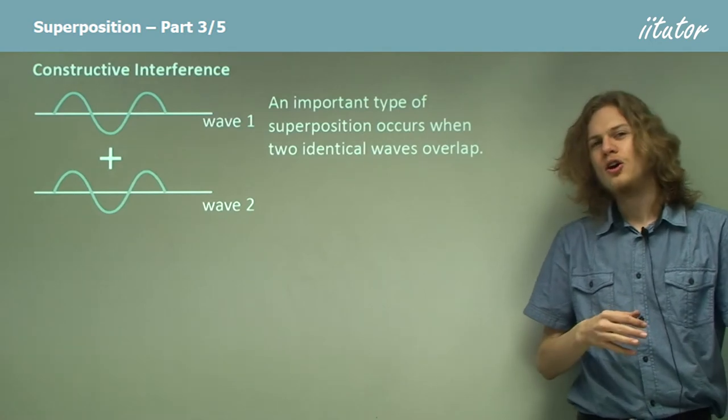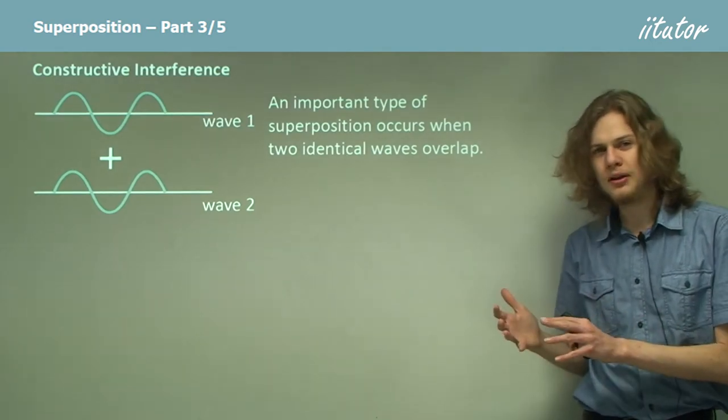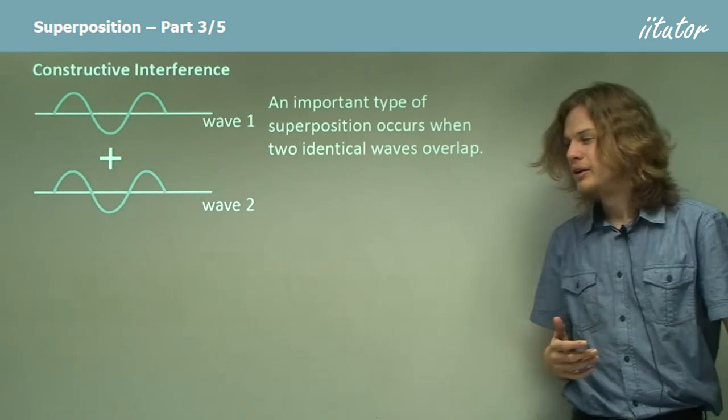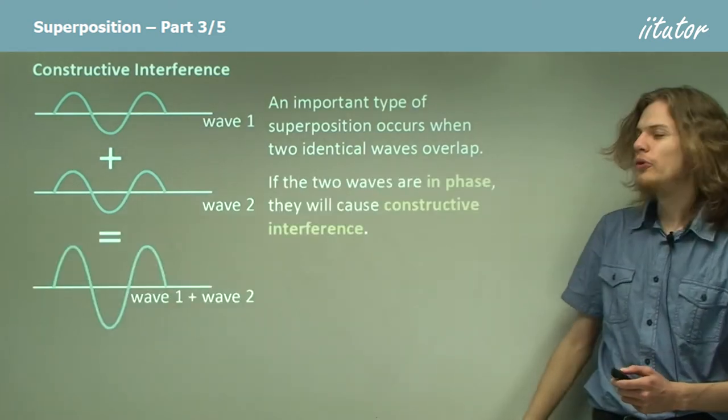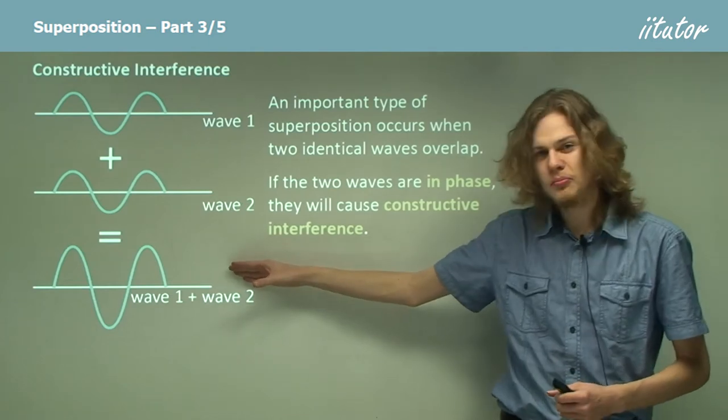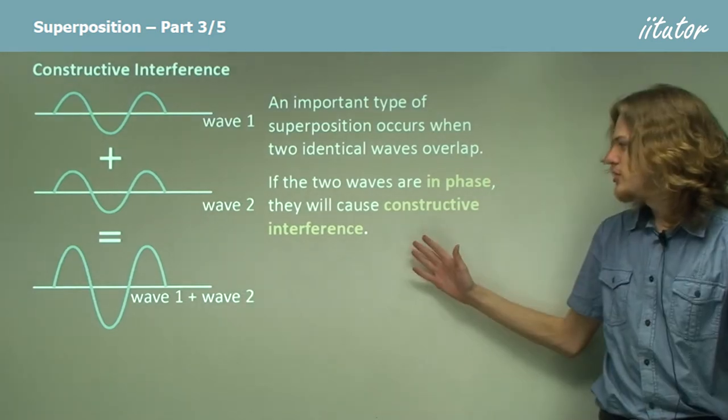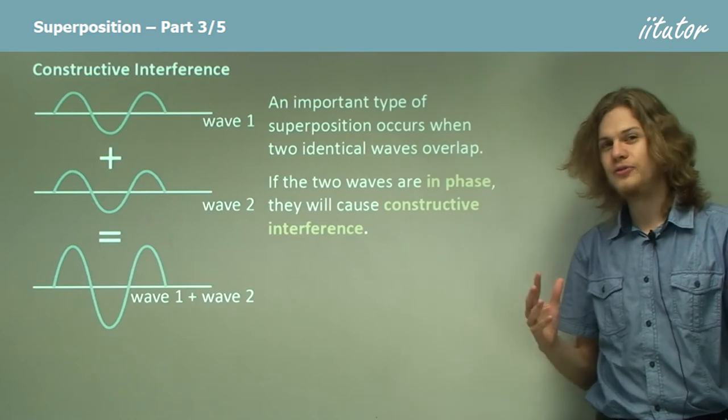So what will happen when these two waves start overlapping and become superimposed? Well as I'm sure you can guess we'll get a wave that looks very similar but with more amplitude. So this is called constructive interference.